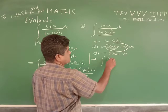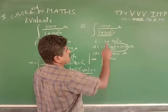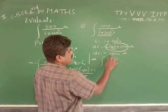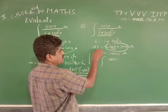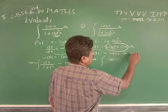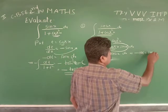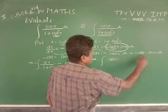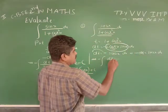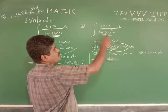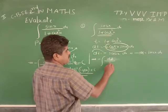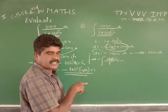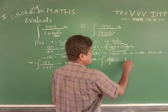Therefore sin(2x) dx equals minus dt. Substituting, the integral becomes minus the integration of dt divided by t, since 1 plus cos²(x) is taken as t. We know that the integration of dx/x is log(x), so here we get minus log(t) plus C.